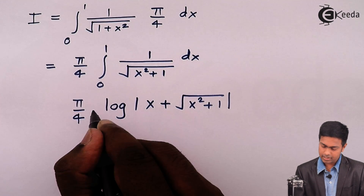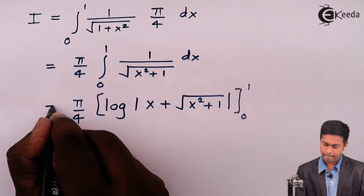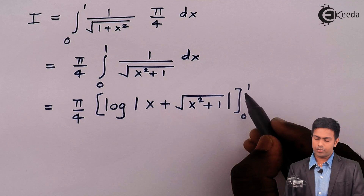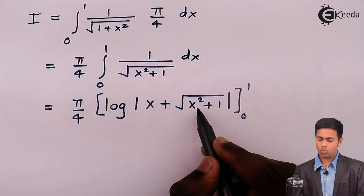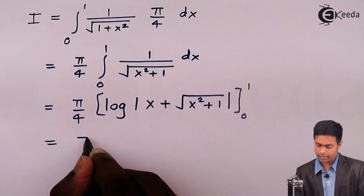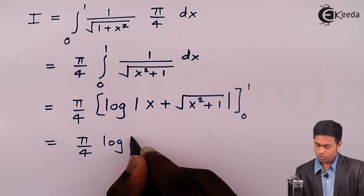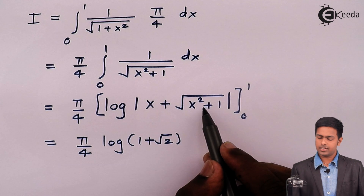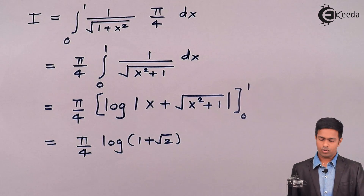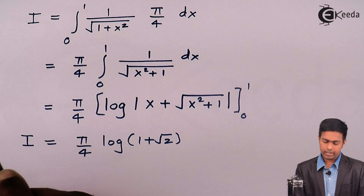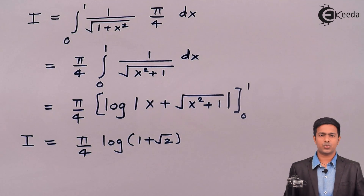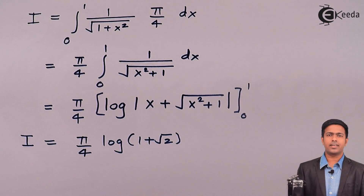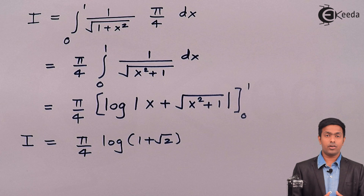Applying the formula with limits from 0 to 1: substituting the upper limit gives 1 plus square root of 1 plus 1, which is 1 plus root 2. Substituting the lower limit gives 0 plus square root of 1, which is 1, and log of 1 is 0. So the final answer is pi over 4 times log of 1 plus root 2. We have successfully evaluated the double integral by determining the correct order of integration.